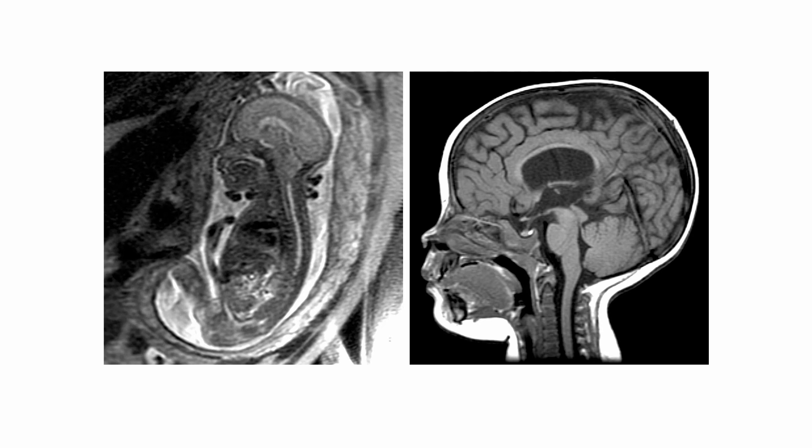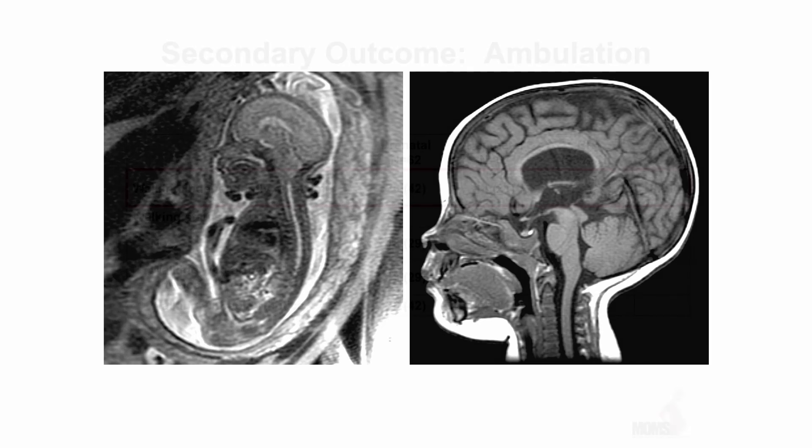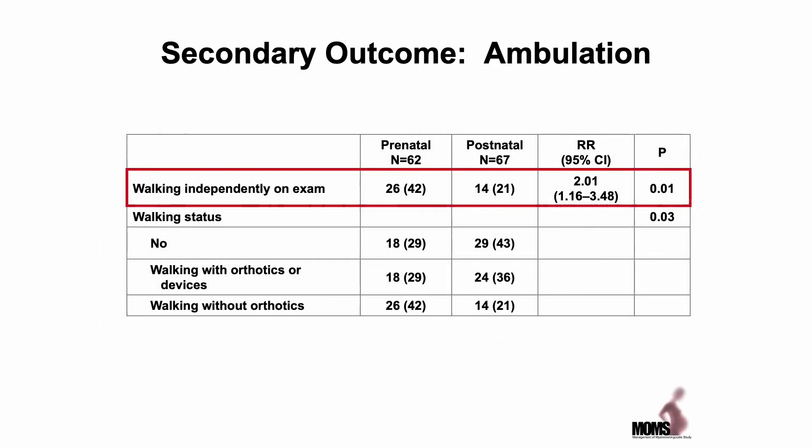In terms of functional outcomes, when the two groups were compared, approximately 42% of those in the prenatal group were able to walk independently. These outcomes were measured at 30 months of age compared to the postnatal group.